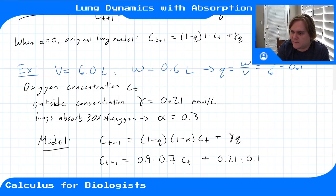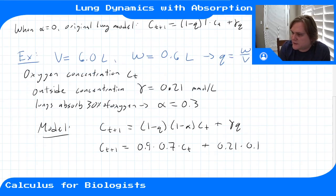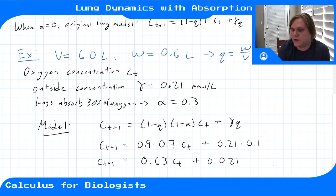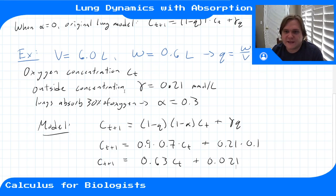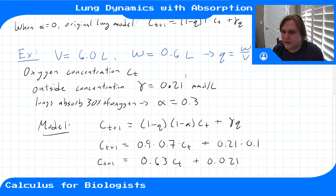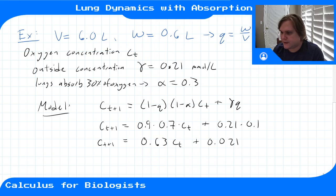Simplifying: c_{t+1} = 0.63 * c_t + 0.021. This is the model for oxygen gas exchange where 30 percent of oxygen is absorbed between breaths — before taking a breath the lungs absorb 30 percent of the oxygen, then exhale and inhale more oxygen from the environment.